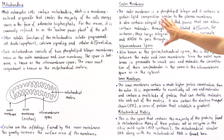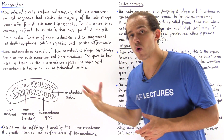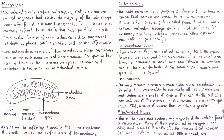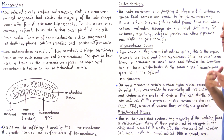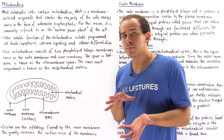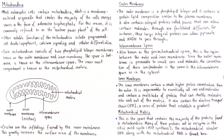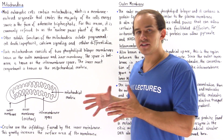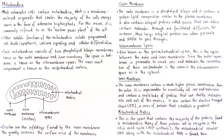Let's look at each structure and why it is important, beginning with the outer membrane. The outer membrane is a phospholipid bilayer, basically the same type of membrane found around the cell, with a protein-lipid composition very similar to that of the plasma membrane.